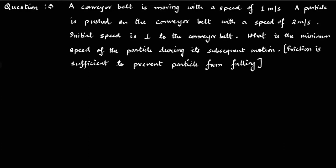This problem says there is a conveyor belt moving at a speed of 1 meter per second, and a particle is pushed onto the conveyor belt with a speed of 2 meters per second. Initially, the speed of the block is perpendicular to the conveyor belt. We have to find the minimum speed of the particle with respect to the ground during its subsequent motion, and friction is sufficient.